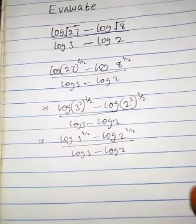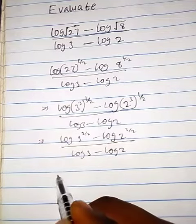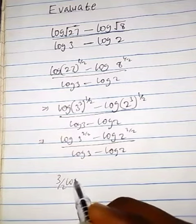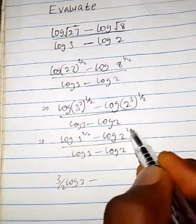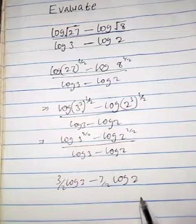So now we have to apply laws of log rating. So we use 3 over 2 to multiply this guy. So we have 3 over 2 log 3 minus 3 over 2 log 2 from laws of log rating.